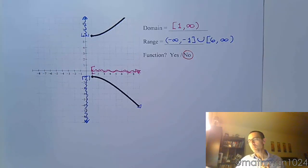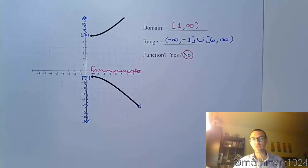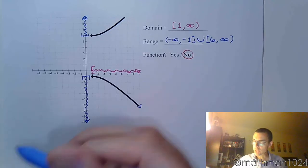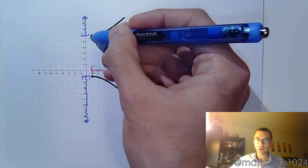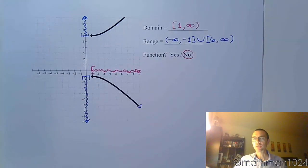You jump to 6 with a bracket. And he goes to infinity. So the domain didn't need a union because they were both from 1 to infinity. But the range, as you go bottom to top, there's a jump right here. And so that's where that union sign has to come in.